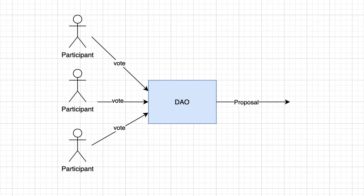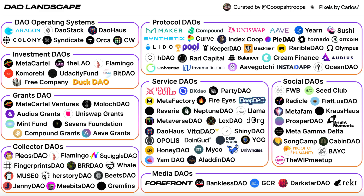A DAO is a voting smart contract. Participants use the DAO smart contract to create and vote on proposals. Let's see some specific use cases.